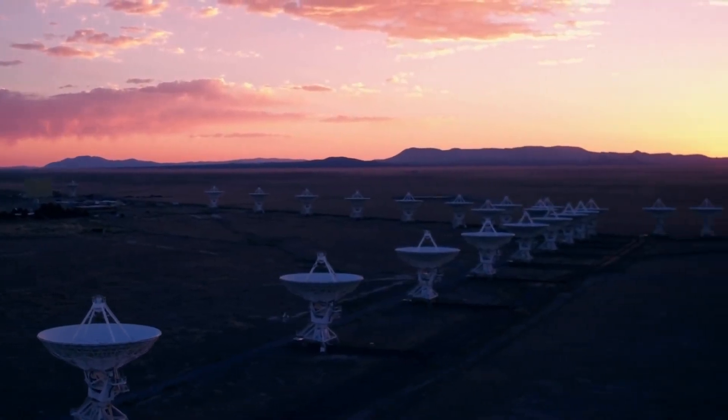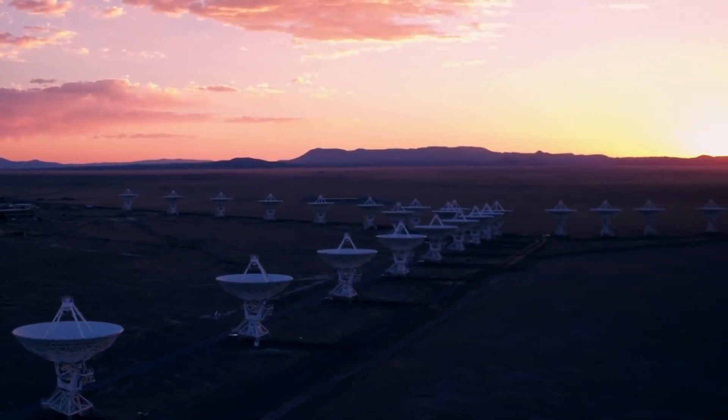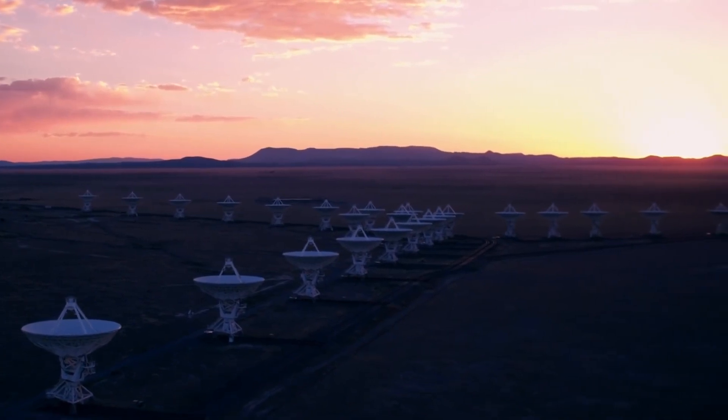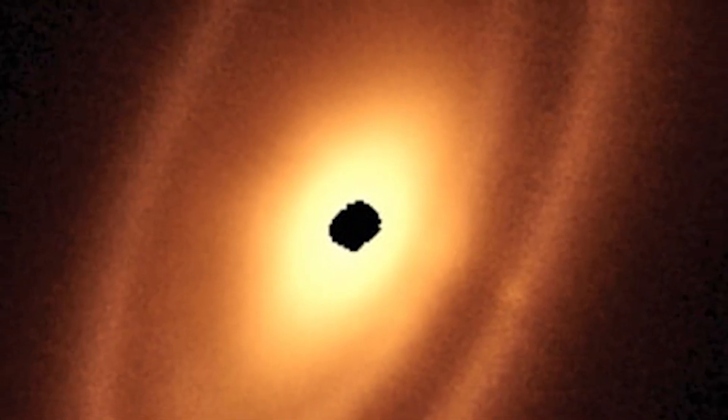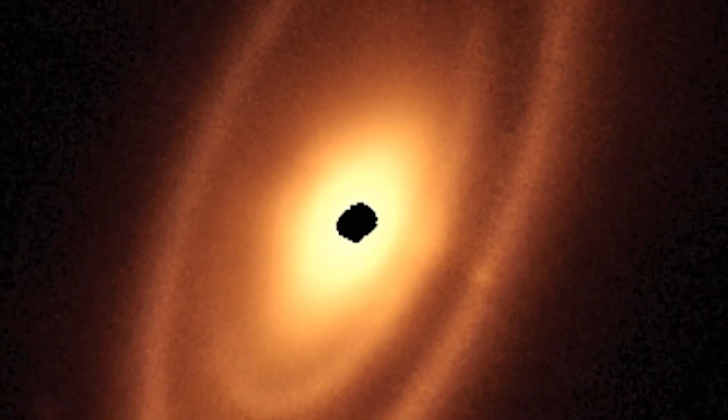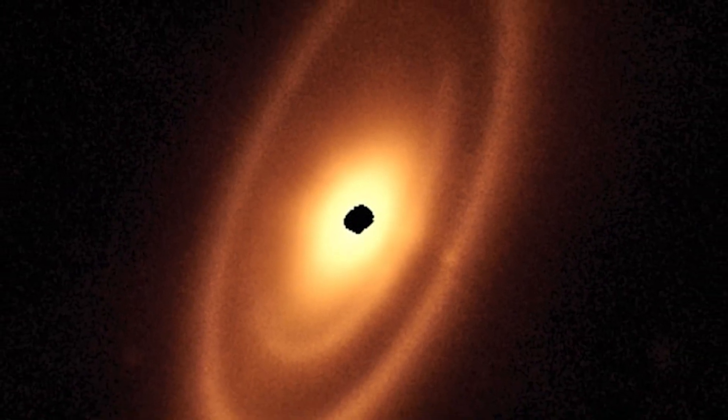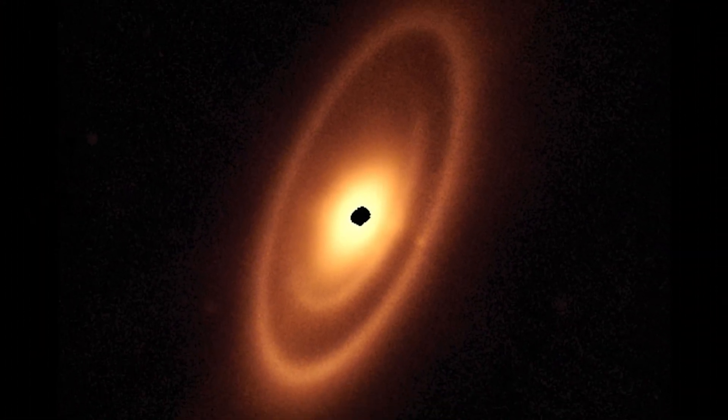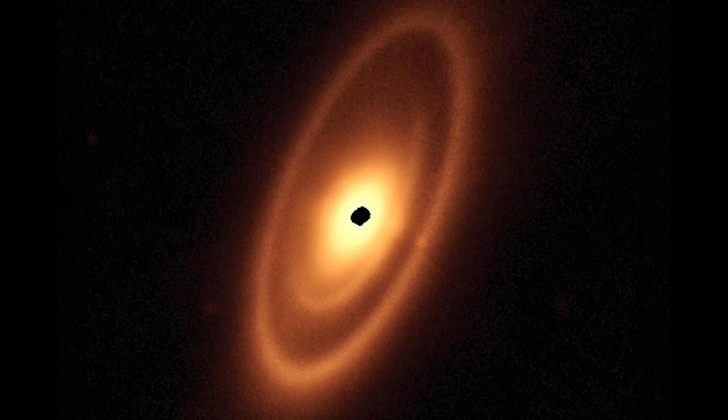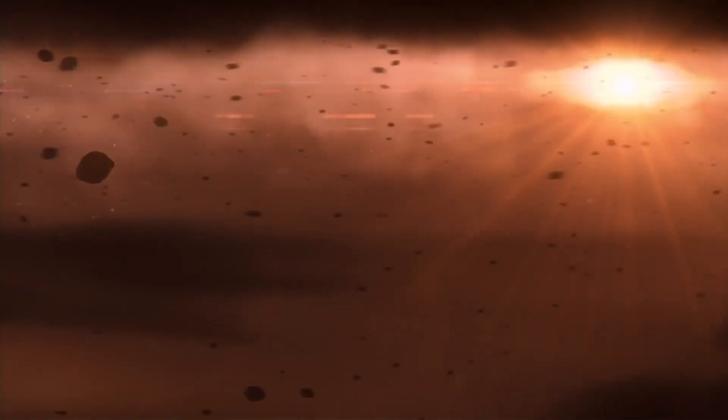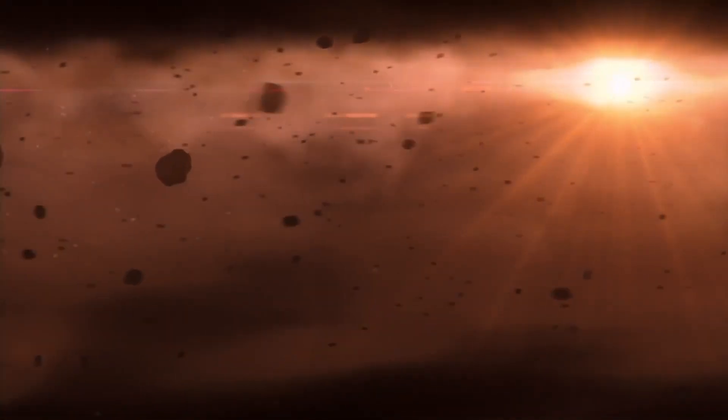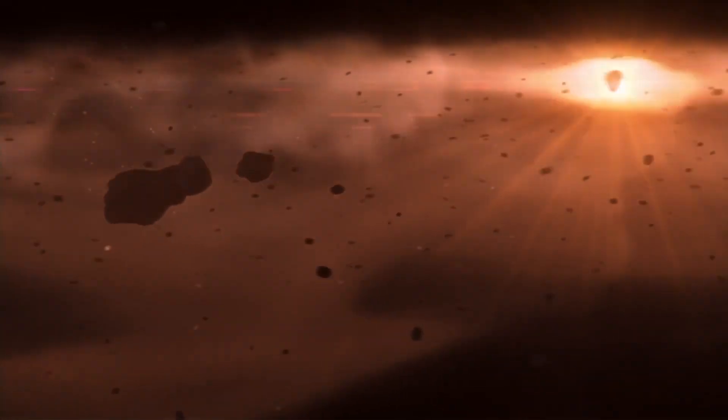Observations of protoplanetary disks around young stars indicate that very similar processes are taking place there. For example, observing the protoplanetary disk of the star Fomalhaut located 25 light-years from the sun revealed several areas of increased substance concentration, somewhat resembling the rings around Saturn. Probably it is precisely in these areas that the formation of gas giants like Jupiter or Saturn is currently taking place.